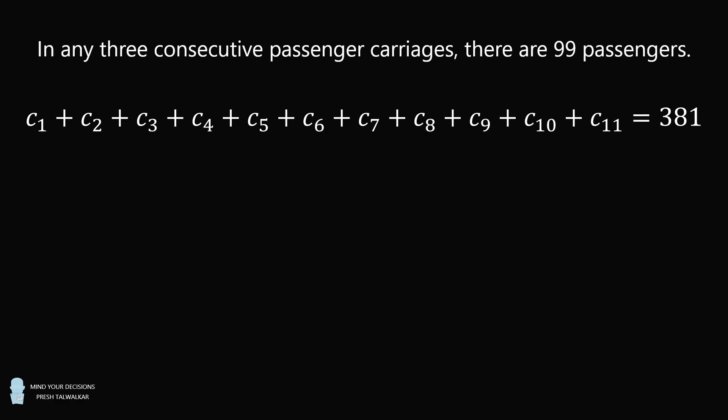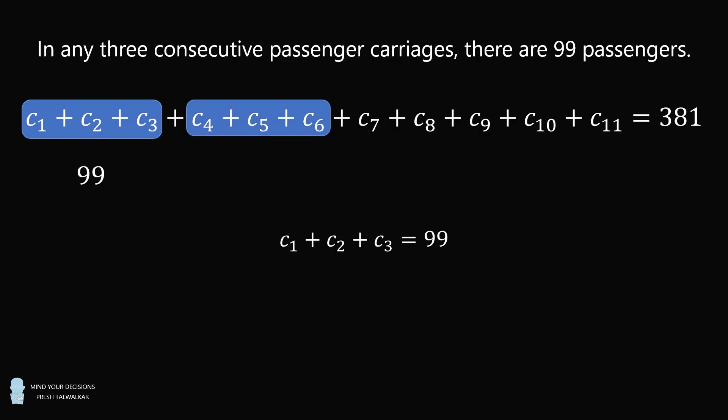In any three consecutive passenger carriages, there are exactly 99 passengers. So C1 + C2 + C3 = 99. Then C4 + C5 + C6 = 99. Then C7 + C8 + C9 = 99. We can substitute these in.